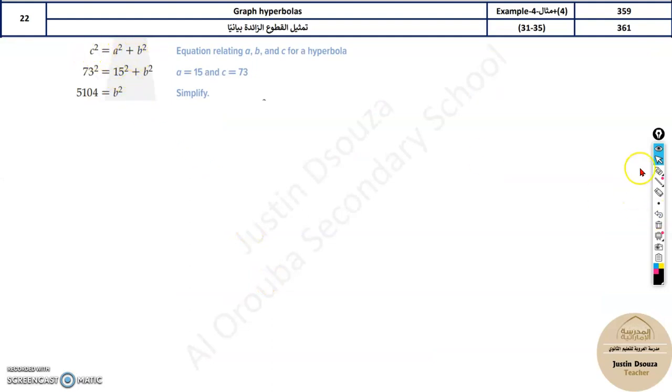Now we are using the same formula. We found c was 73, a was 15, b is unknown. Just take this to the other side, subtract 73 squared minus 15 squared and you will get the answer. Then we can use the equation. X squared divided by a squared, now a squared formula, 15 squared minus, we are not doing b, this is not b value, this is b squared value. We will just use that: 5104 below y squared equals 1.